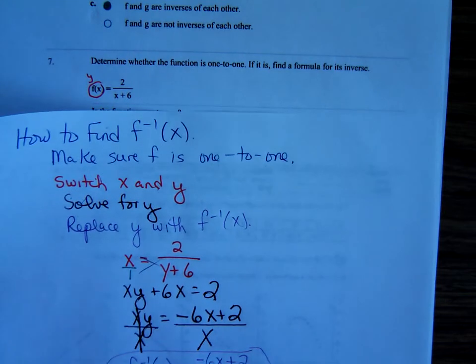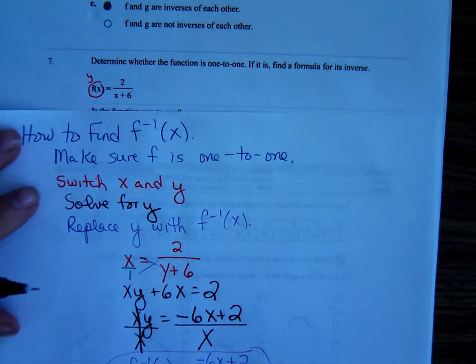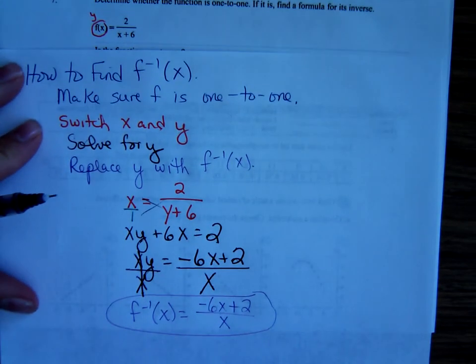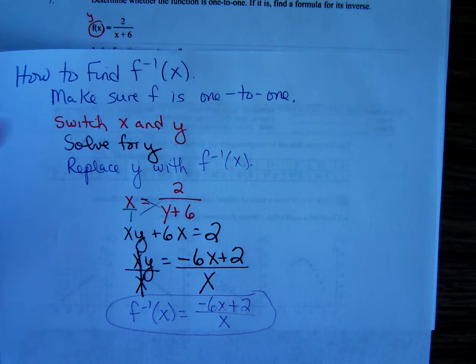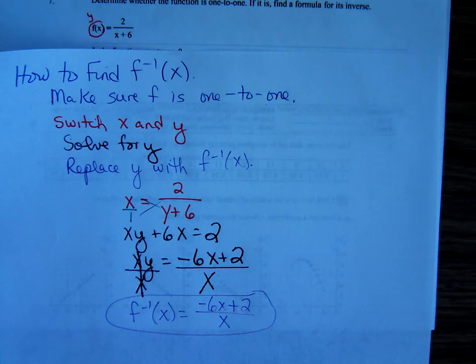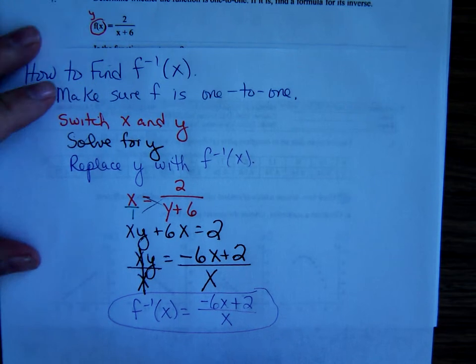So, that's how to find the inverse of a one-to-one function. Interchange the x and y or switch x and y. Solve for y. Solve for y and replace the y with f inverse. So, negative 6x plus 2 all over x.